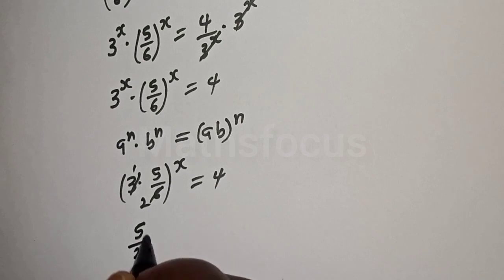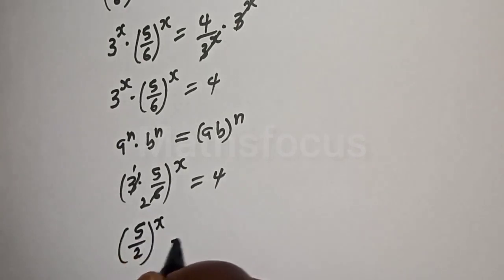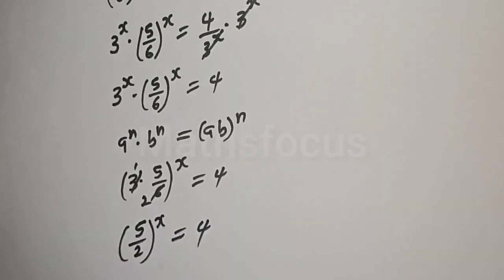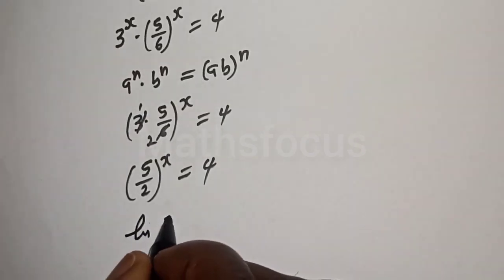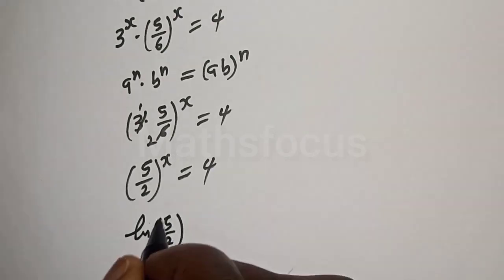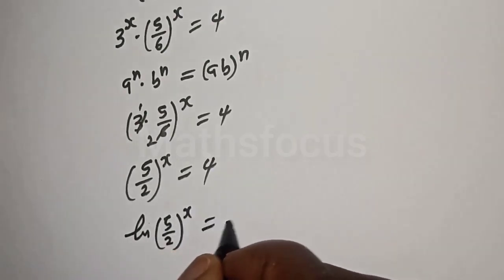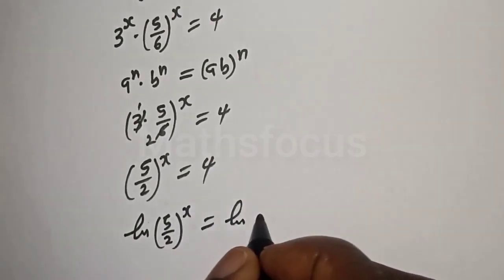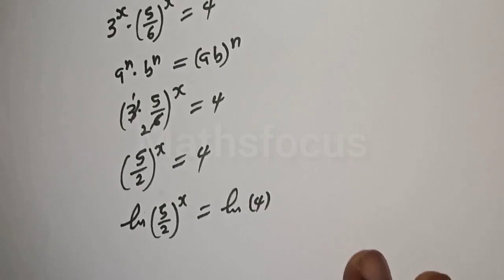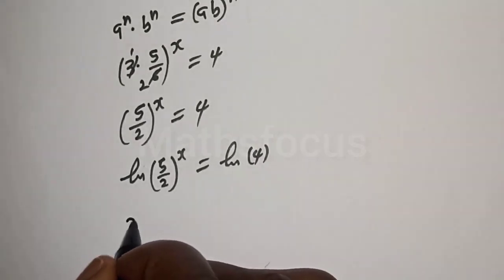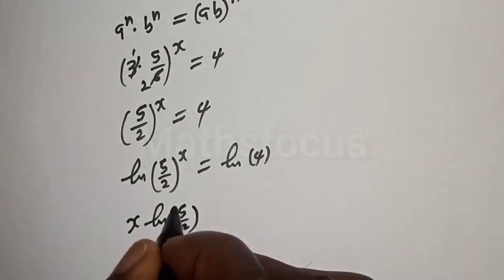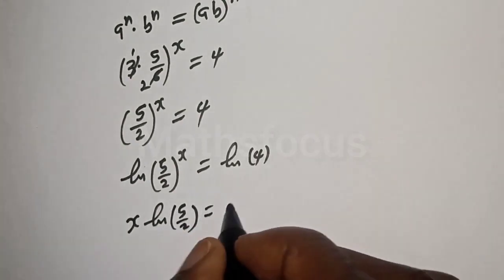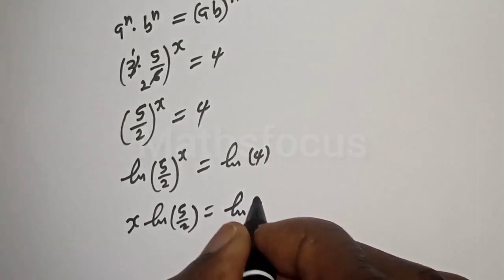5 over 2 raised to power x is equal to 4. Now let's take the log of both sides. The natural log of 5 over 2 raised to power x is equal to natural log of 4. So x times natural log of 5 over 2 is equal to natural log of 4.